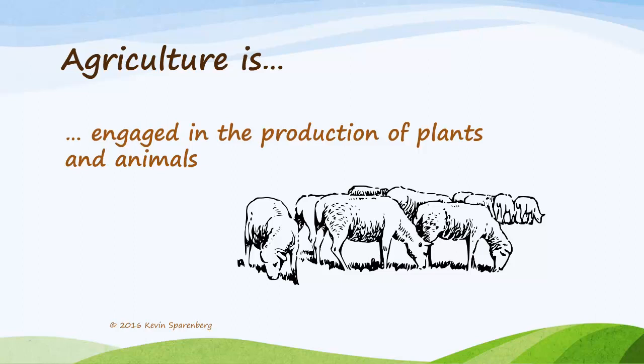Agriculture is engaged in the production of plants and animals. Notice it doesn't say the production of wheat or corn, or the production of pigs or rabbits. We keep it basic with the production of plants and animals.